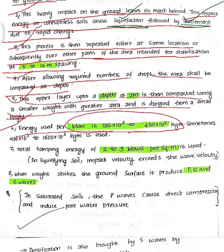The total tamping energy of 2 to 3 blows per square meter is used. The impact velocity exceeds the wave velocity.